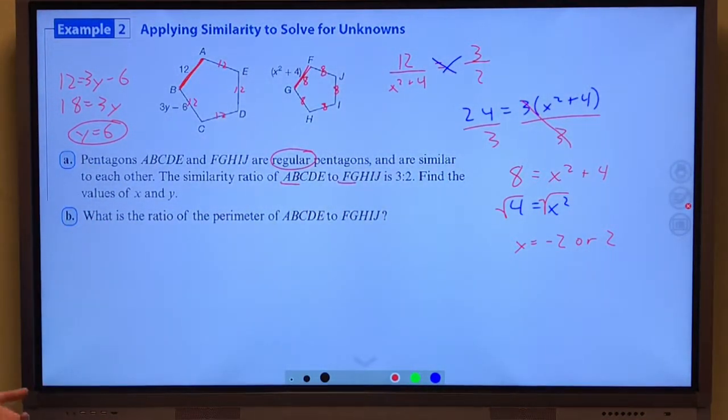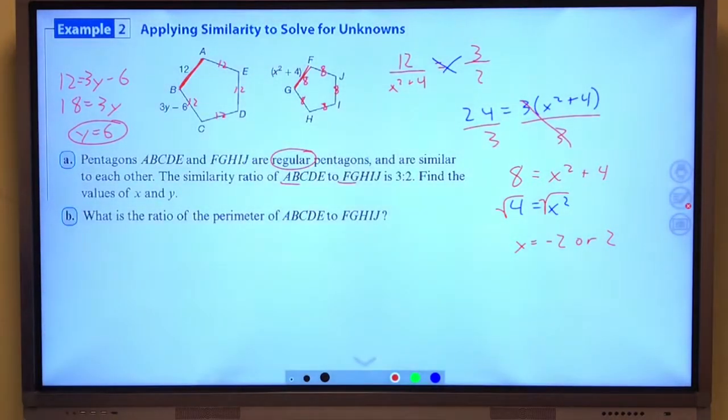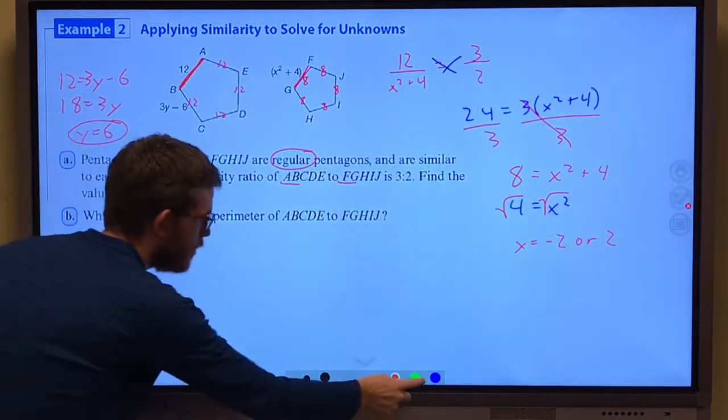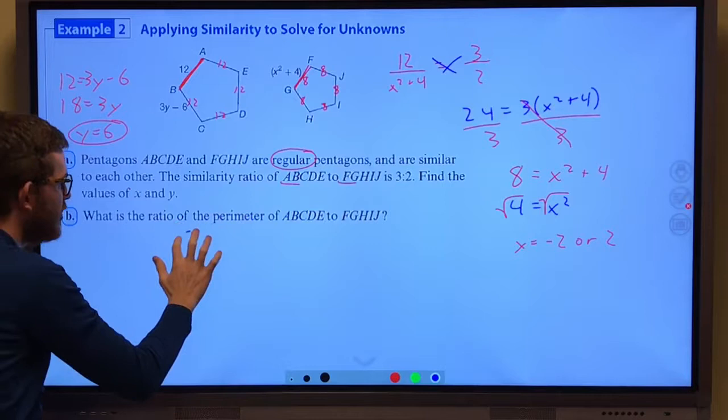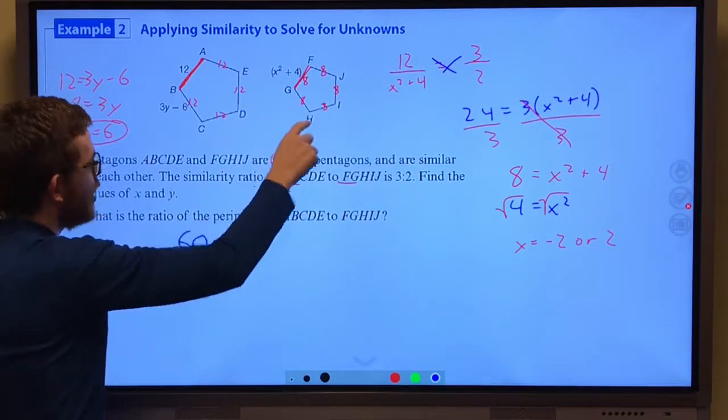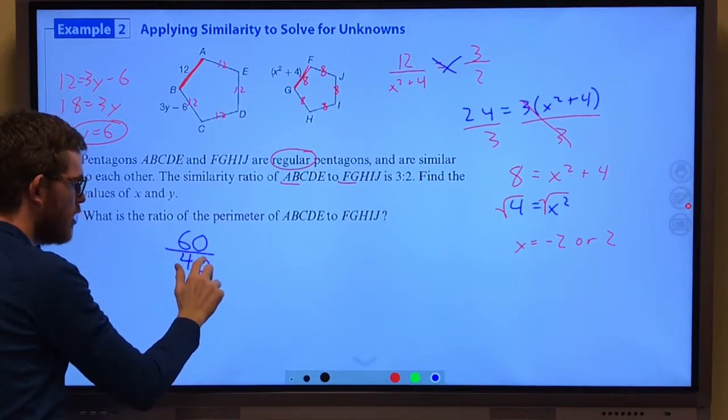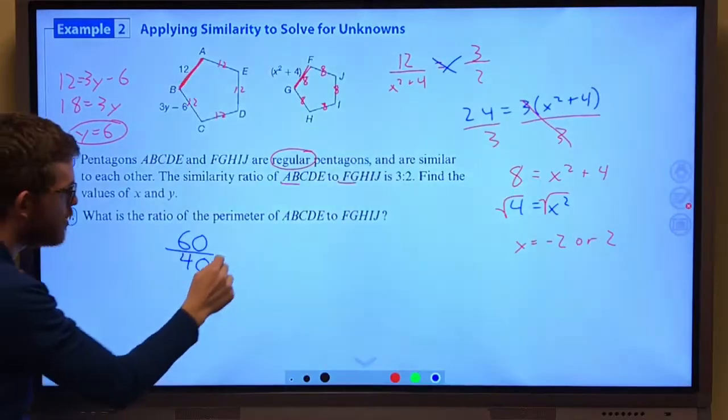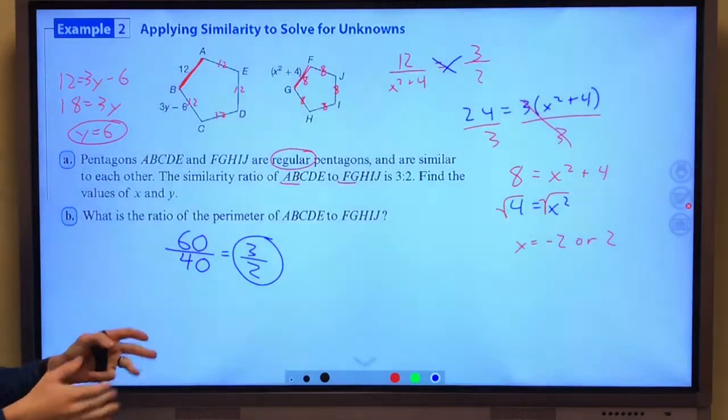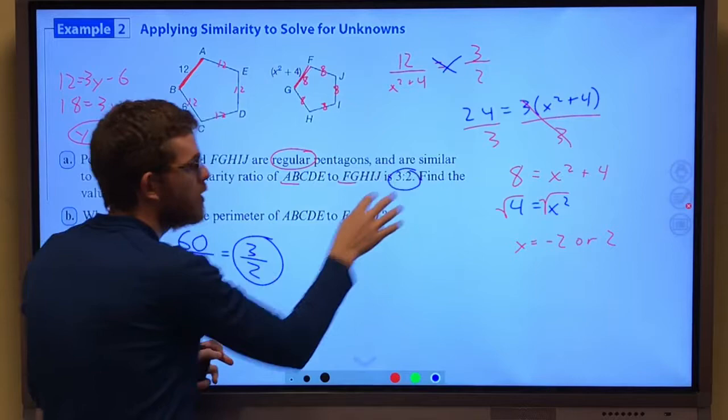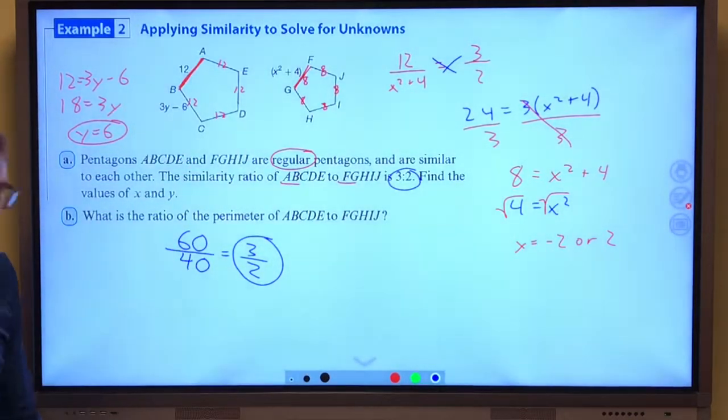And here it says what is the ratio of the perimeter of ABCDE to FGHIJ? Well, 12 times 5 is 60, and 8 times 5 is 40. So that is 60 to 40. And if we reduce 60 to 40 we get 3 to 2. So notice the ratio of the perimeters is the same as the ratio of the sides. The larger to smaller is 3 to 2. In fact, that's our next theorem.